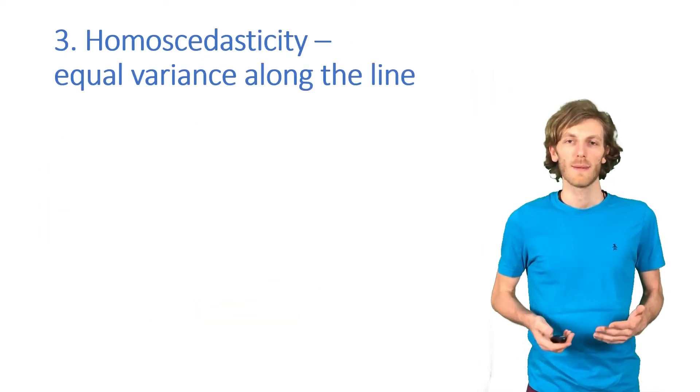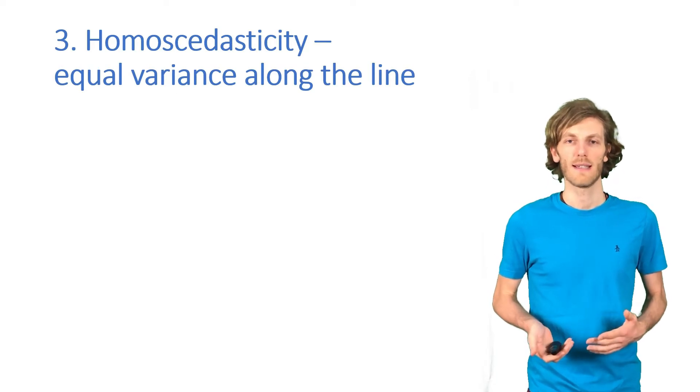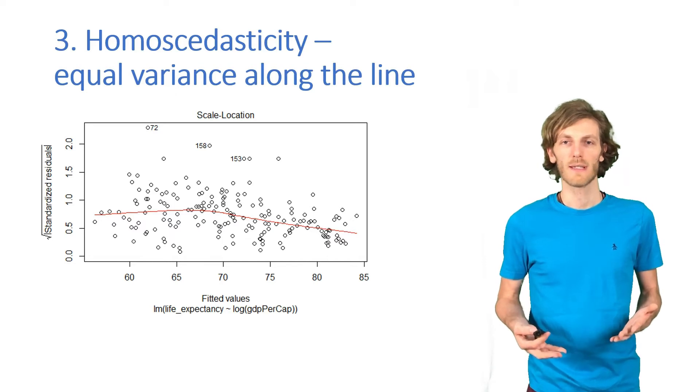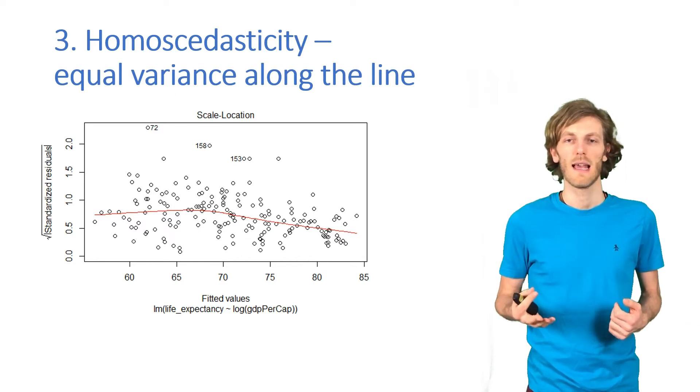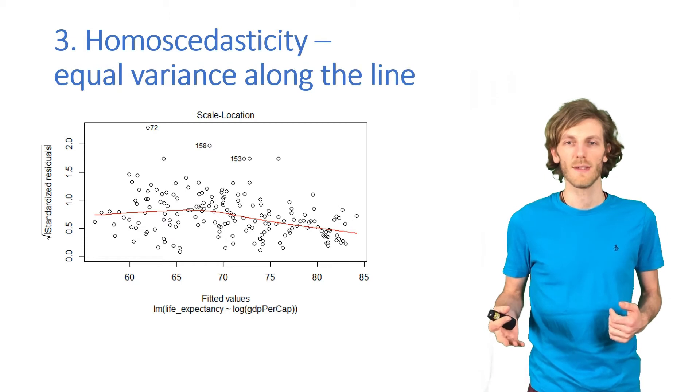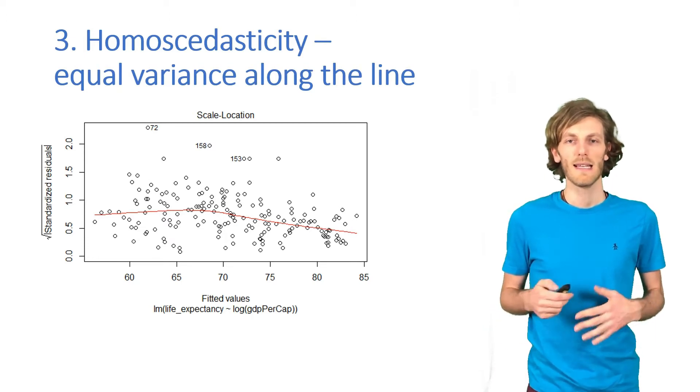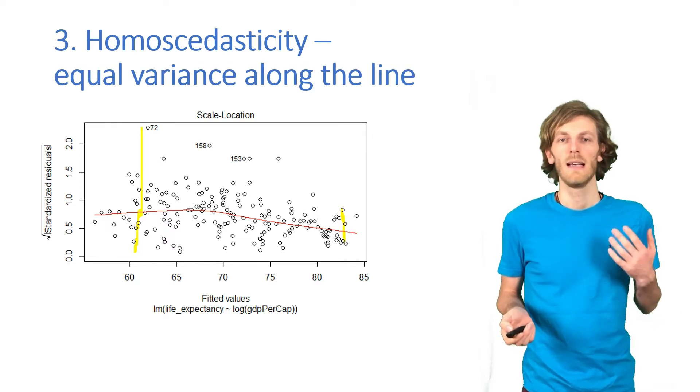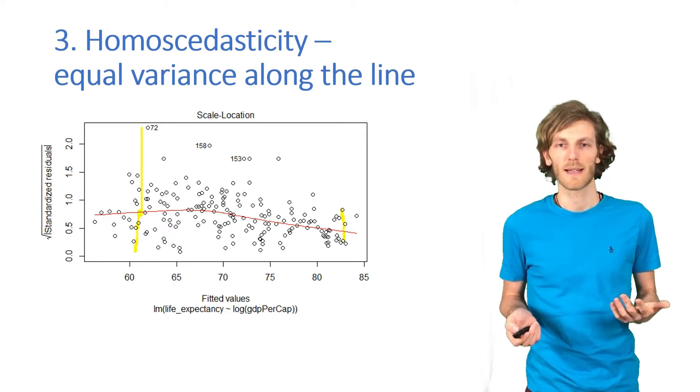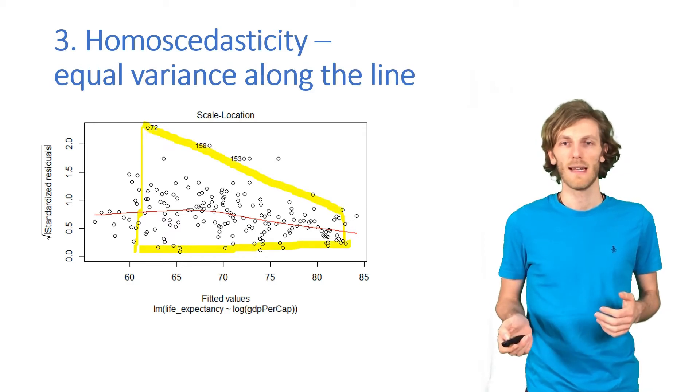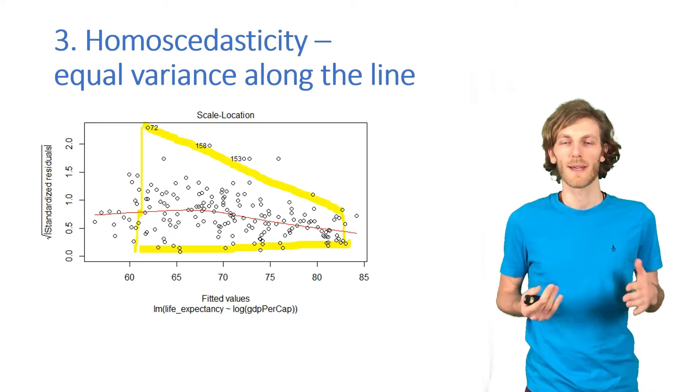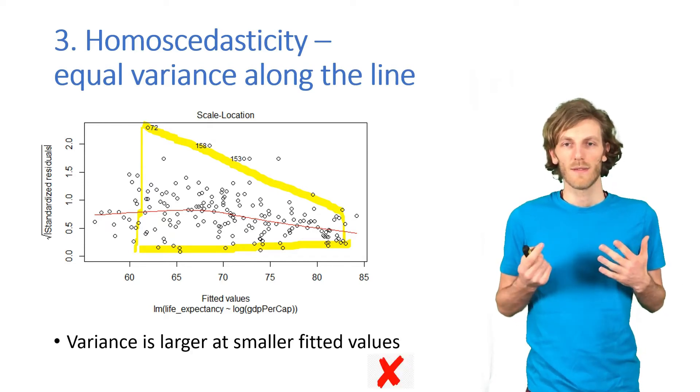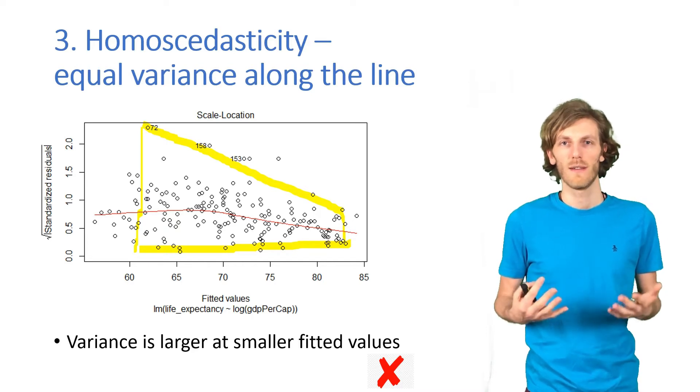Next, we look at whether we have equal variance along the regression line, so where the homoscedasticity is given. For that, we get a third plot here of standardized residuals compared to the fitted values, and we see that probably the variances are not equal. It looks quite clearly like the variance at smaller predicted life expectancies is greater than at higher predicted life expectancies, so we get this typical kind of funnel-shaped form. So, this assumption is also violated.